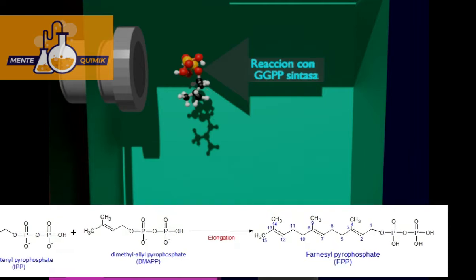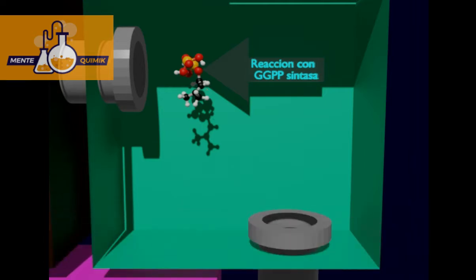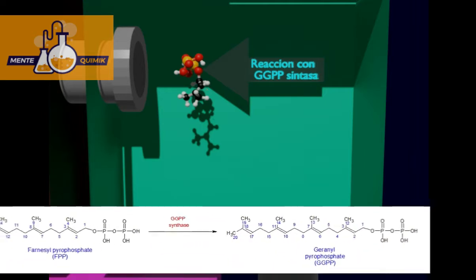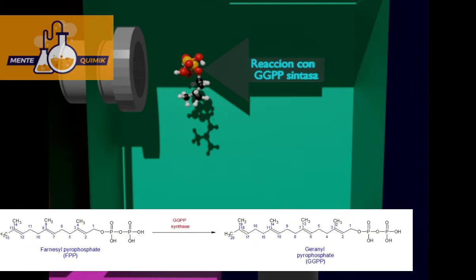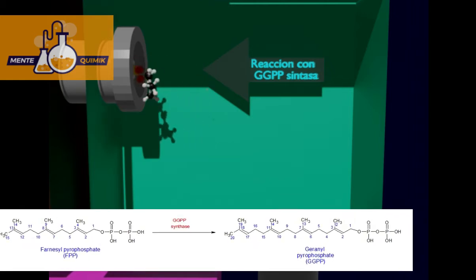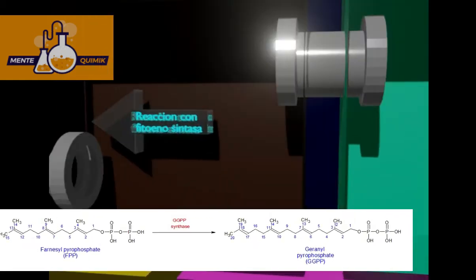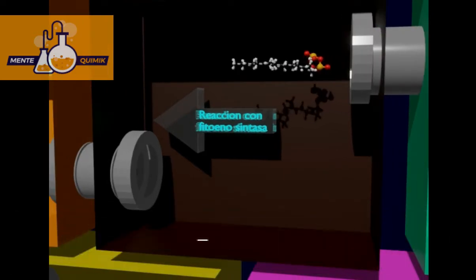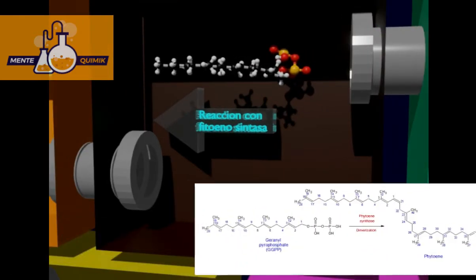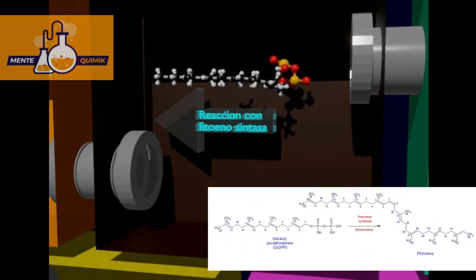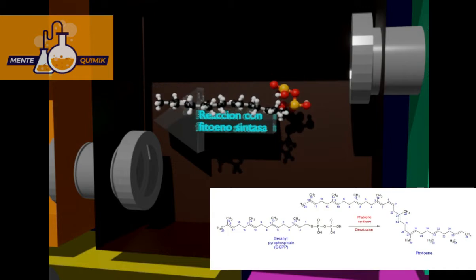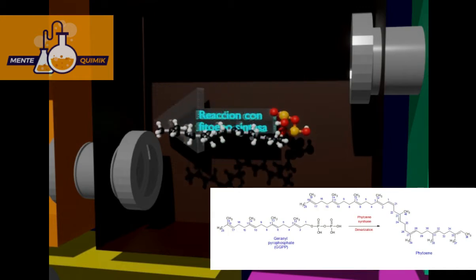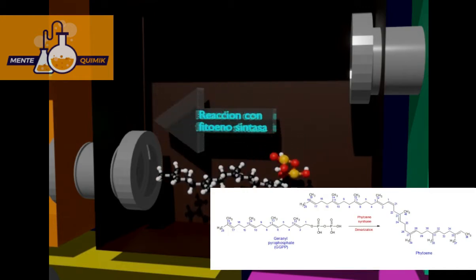Farnesyl pyrophosphate reacts with the enzyme geranylgeranyl pyrophosphate synthase to form geranylgeranyl pyrophosphate. Geranylgeranyl pyrophosphate is then dimerized with the enzyme phytoene synthase to produce the molecule phytoene.